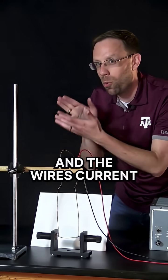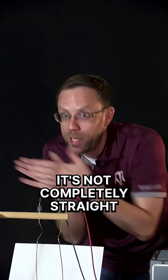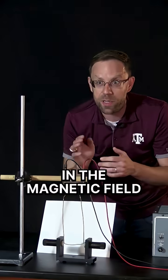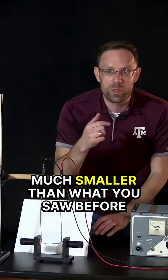It turns a little bit, but it doesn't jump quite like it did before. When the magnetic field and the wire's current are parallel to each other, there is no force. Now, this wire isn't perfect. It's not completely straight. And the magnetic field isn't perfect. So there are some little bends in the magnetic field. So there's going to be a little bit of force and there's going to be a little bit of torque. But the effect is much smaller than what you saw before.